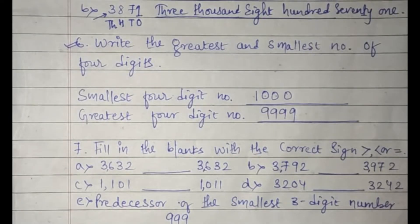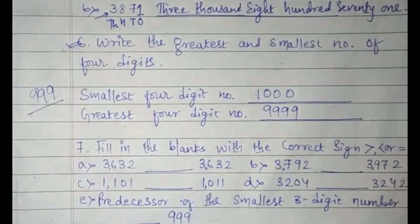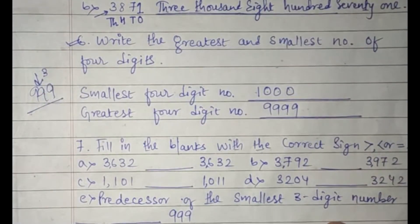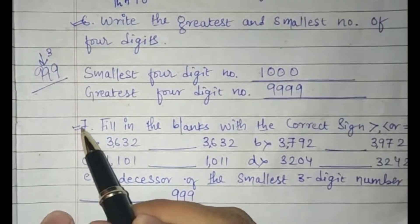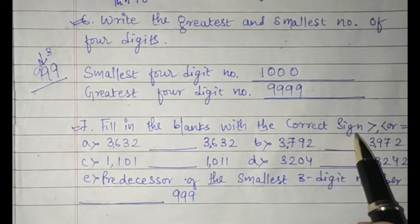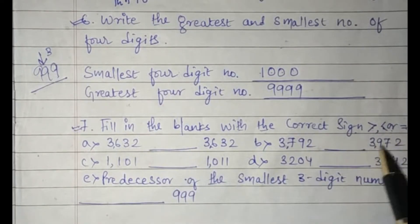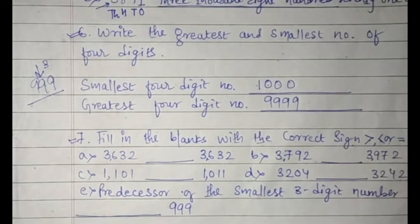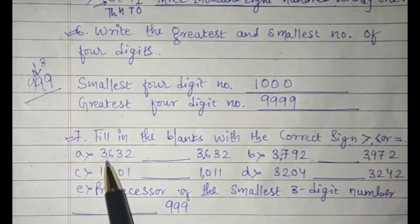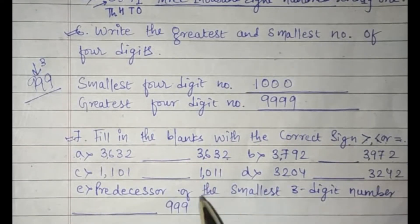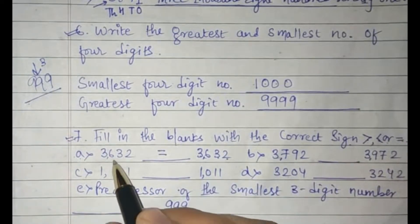Question number seven: fill in the blanks with the correct sign — greater than, less than, or equal to. You have to compare the numbers and decide which sign to use. For part A: 3632 and 3632 — both numbers look the same, so we put the equal-to sign because both numbers are equal.